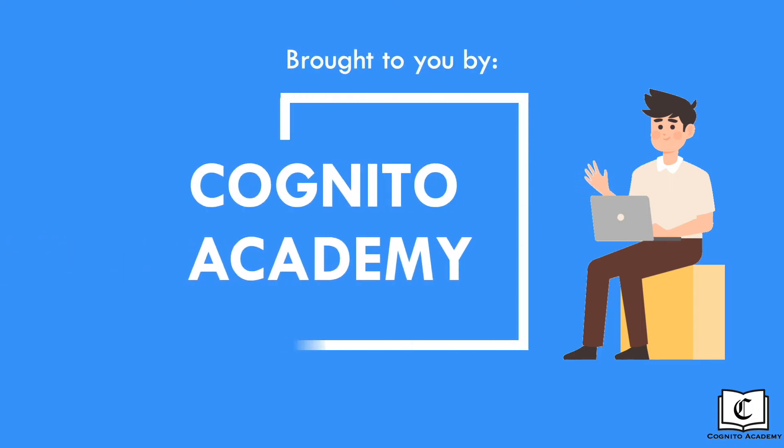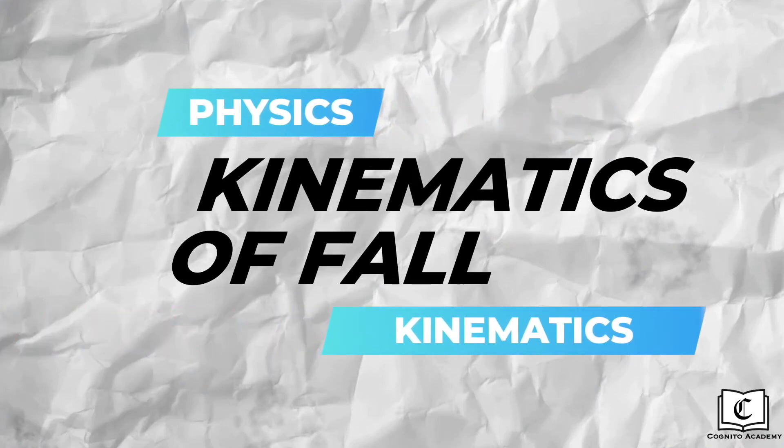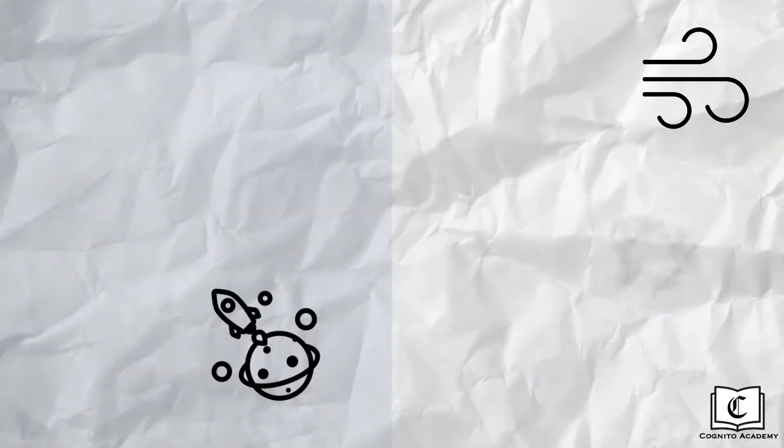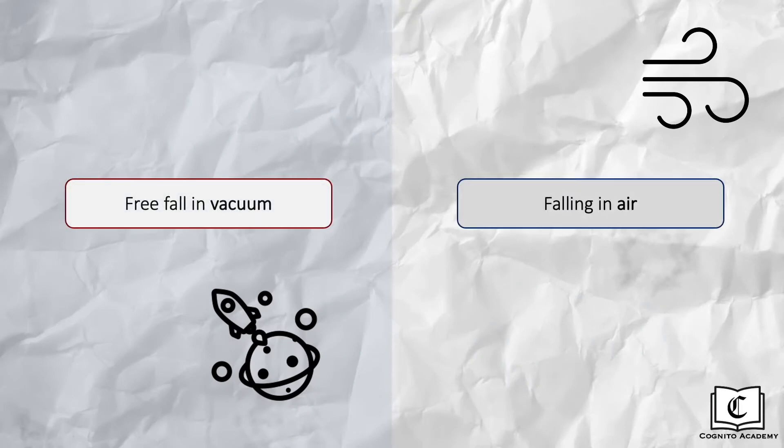Hi everyone, welcome back to this channel. This is Timothy from Cognito Academy, and in this video we will be learning the kinematics of falling objects. We will be covering falling in two scenarios, namely free fall in vacuum and falling in air.